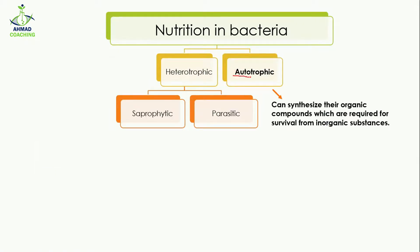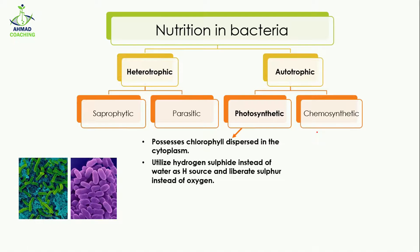Then come the autotrophic bacteria. 'Auto' means self, and these bacteria can synthesize their own organic compounds for their own survival. They are not dependent on a host or on decaying matter. There are two types of autotrophic bacteria: photosynthetic and chemosynthetic.